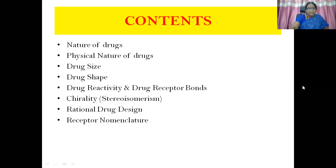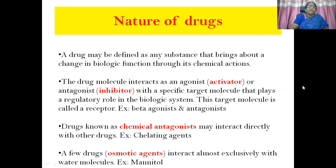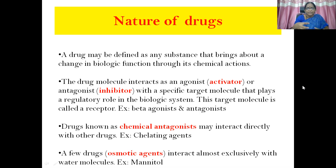First, the nature of drugs. We are going to cover the nature of drugs and physical nature of drugs, drug size, shape, reactivity and receptor bonds, chirality and rational drug design, and receptor nomenclature in this session. A drug may be defined as any substance that brings about a change in biological function through its chemical actions by interacting with molecules and receptors. The drug molecule interacts as an agonist or activator, or antagonist or inhibitor, with a specific target molecule that plays a regulatory role — that is, a receptor in the biological system.